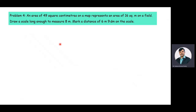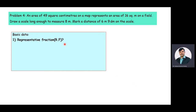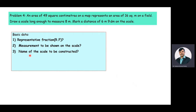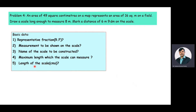While extracting the data from the given problem, we need to answer the following questions: first, the representative fraction value; second, the measurement to be shown on the scale; third, the name of the scale to be constructed; fourth, the maximum length which the scale can measure; and fifth, the length of the scale value in terms of centimeters. The representative fraction value is not given directly — we need to calculate it.